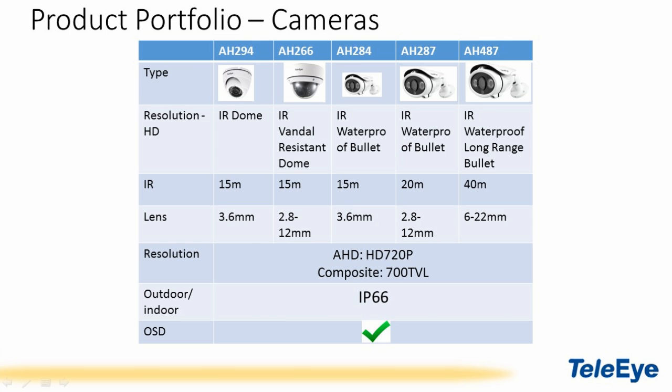We have a very diverse camera portfolio which can satisfy any project requirements. This consists of two dome cameras and three bullet cameras. All of these cameras can achieve 720p HD resolution and 700 TVL in composite video mode.